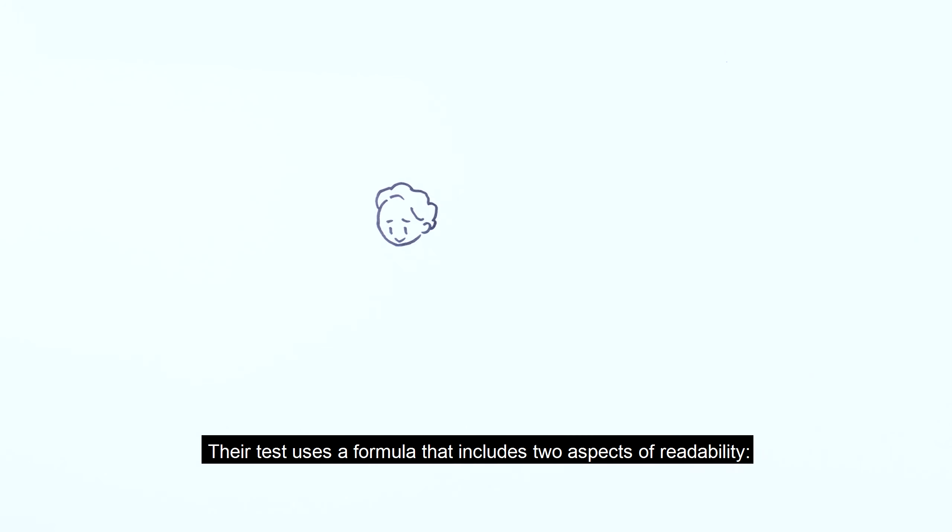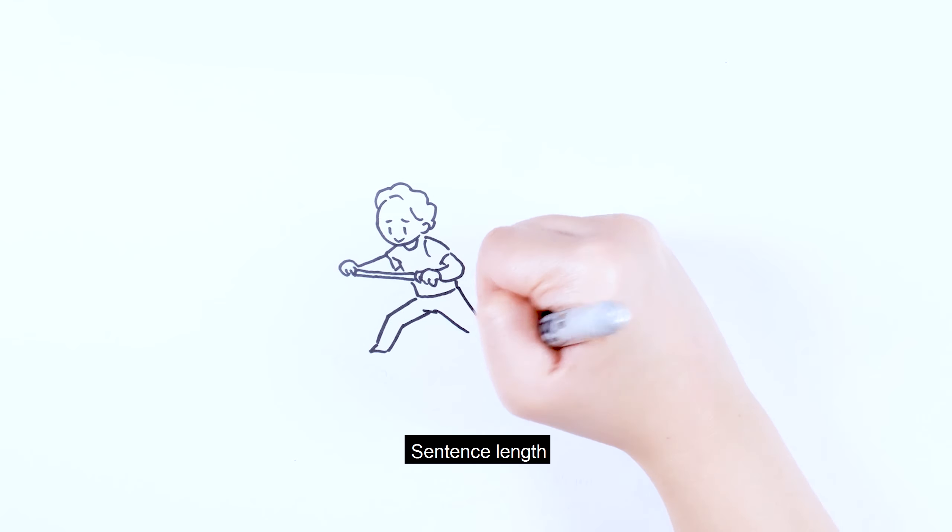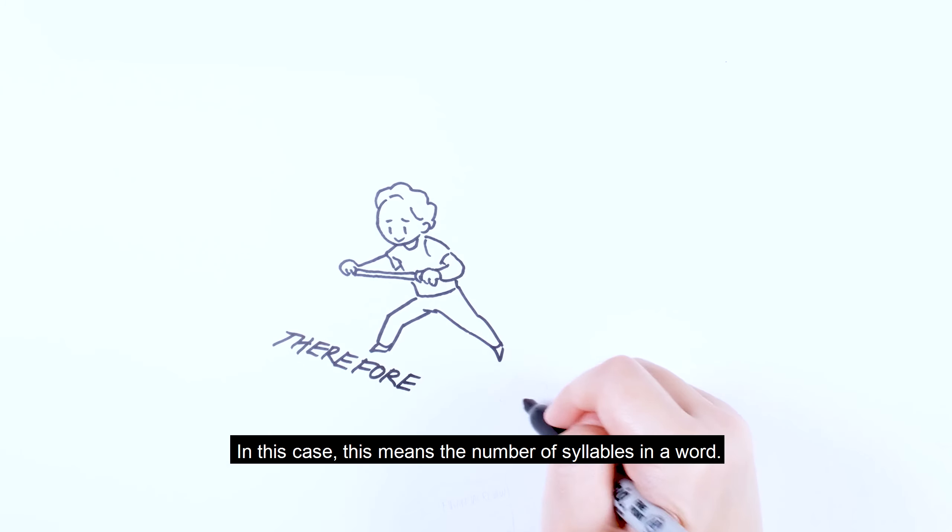Their test uses a formula that includes two aspects of readability: sentence length and word length. In this case, this means the number of syllables in a word.